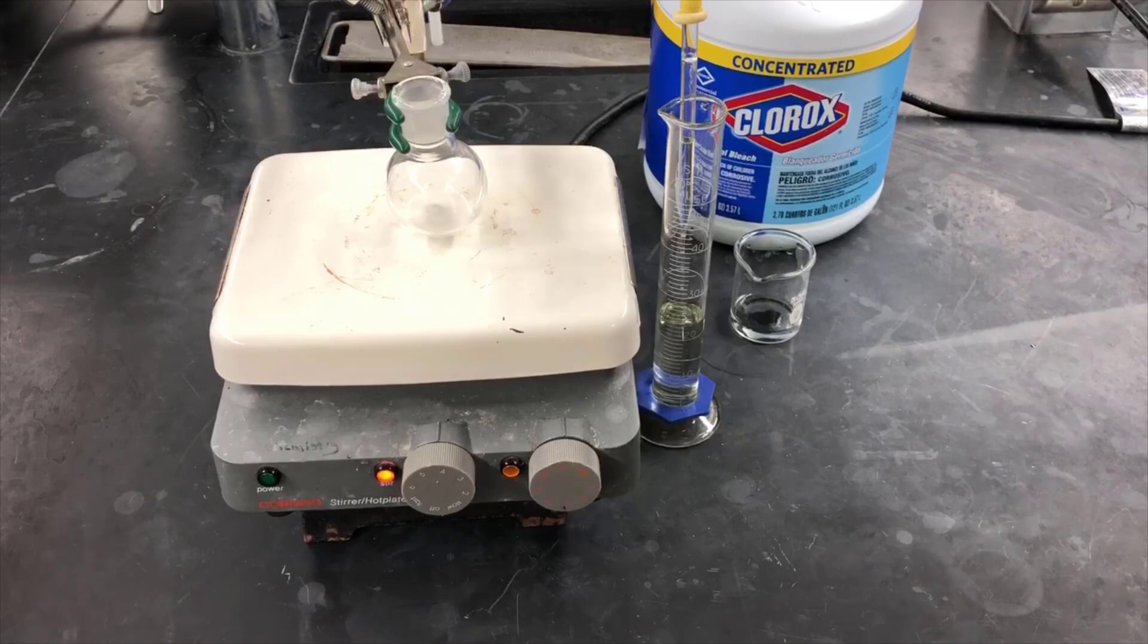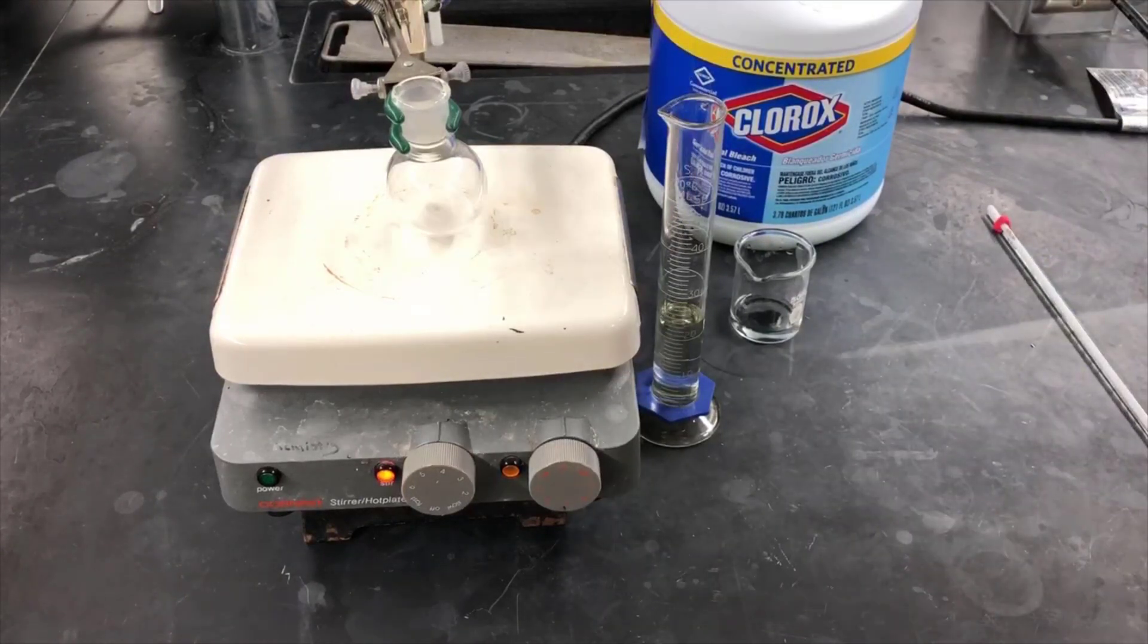You don't want to splash the solution around, and the stir bar and stir motor magnets can sometimes decouple. If the stir bar starts jiggling instead of spinning, you'll know you're going too fast. In that case, slow it down so you get the stir bar stirring again.